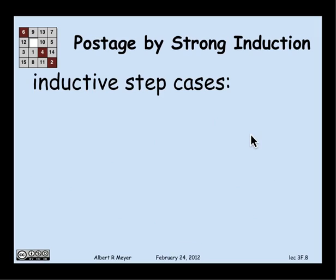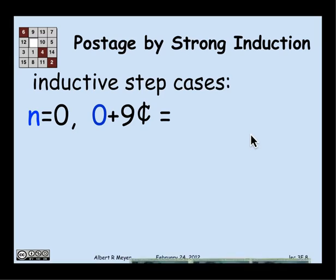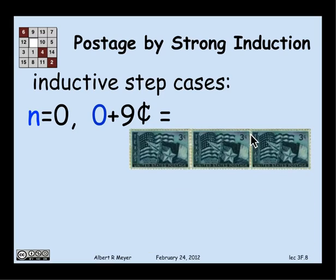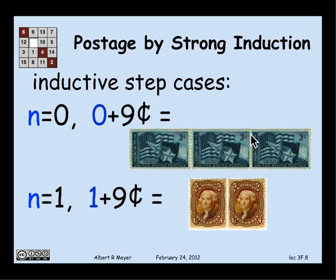Well, that's not too hard to do. The inductive step is actually going to break up into a couple of cases depending on the value of n. Again, I have to prove n plus 9 cents for all n. So suppose n equals 0, I have to get 9 cents. Well, three 3's. If n is 1, I have to get 1 plus 9 cents, or 10 cents, two 5's. So those cases are disposed of.